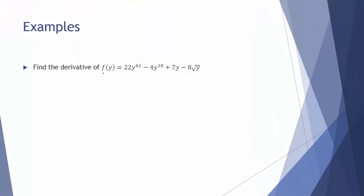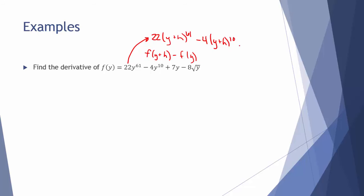Let's look at an example: find the derivative of f of y equals 22y to the 61st minus 4y to the 10th plus 7y minus 8 times the square root of y. If I had asked you to find this derivative before the differentiation rules, you would have needed the limit definition — plugging y plus h into this function. Just y plus h to the 61st power is y plus h times itself 61 times. The algebra would be horrible, so we're definitely not going to use the limit definition.